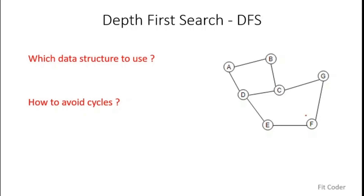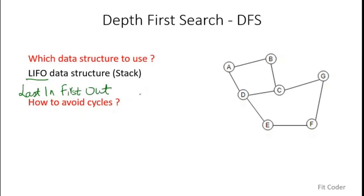The first question is which data structure should we use. The answer is a LIFO data structure — which is a stack. LIFO means last in, first out: whatever was the last element inserted will be the first one out. In DFS, we explore as deeply as possible — from A to B, B to C, C to D — and then we have to retract. The concept of DFS aligns with stack because the last node visited is the one from which we explore next unexplored nodes. Only a stack can track this because the top element is the last used one.